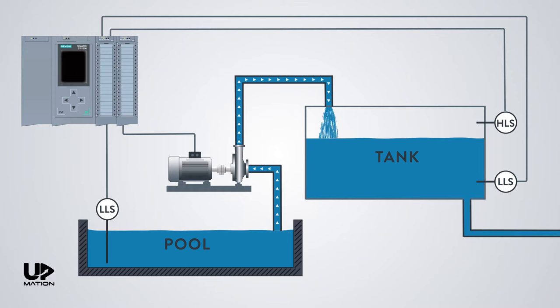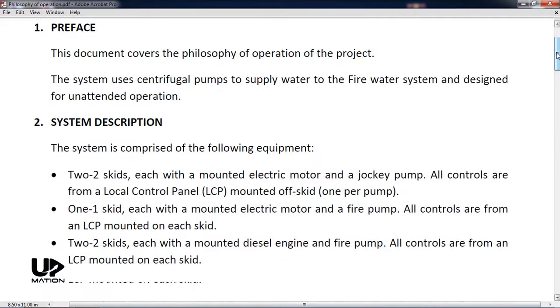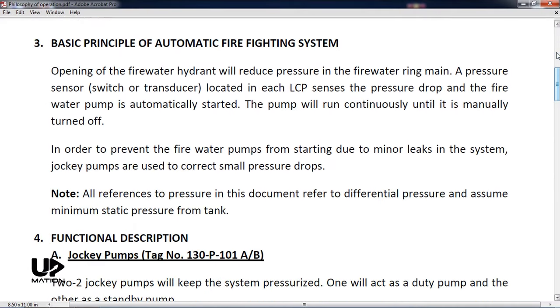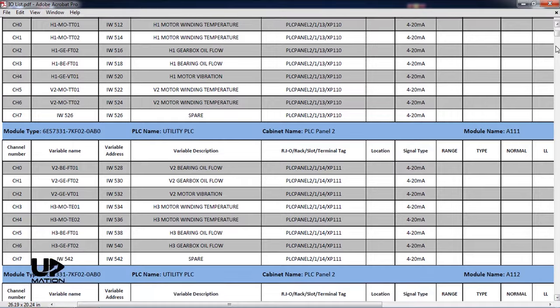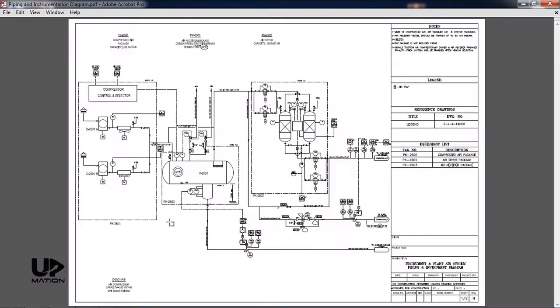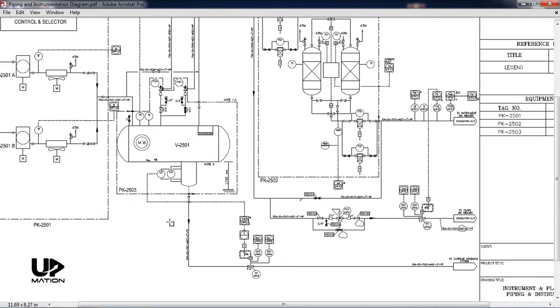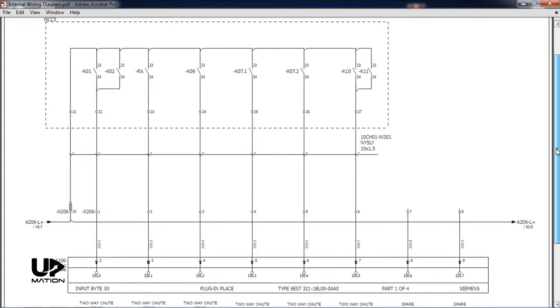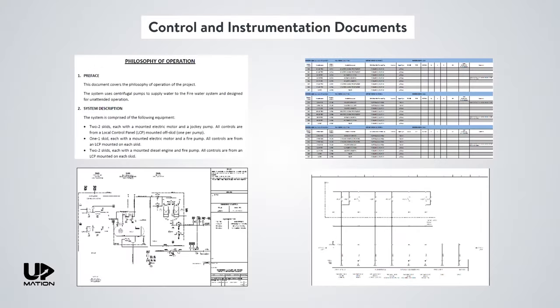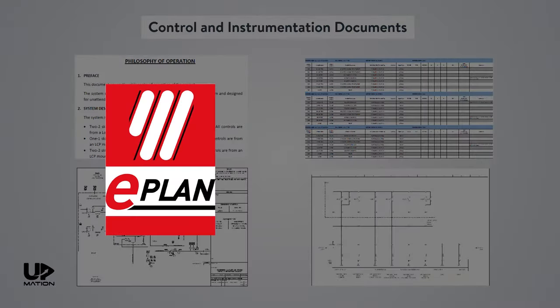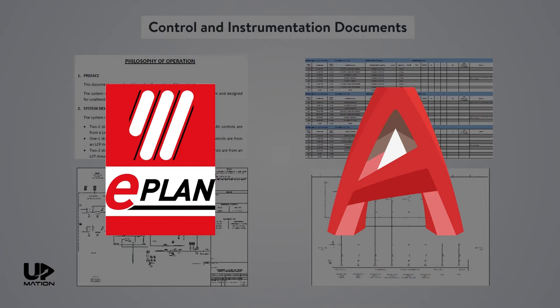First of all, we have to know what the logic behind this system is. In the real situation, there are some documents for this purpose such as philosophy of operation, IO lists, piping and instrumentation diagrams, internal wiring diagrams, and so on. We will learn about the control and instrumentation documents and drawings and how to design and draw them in software such as ePlan or AutoCAD Electrical in future videos.